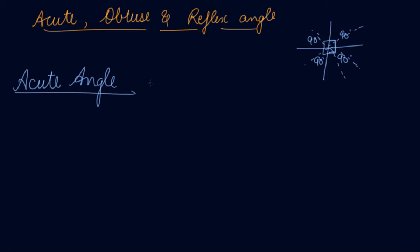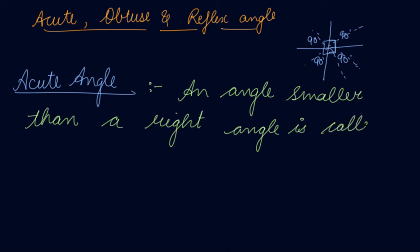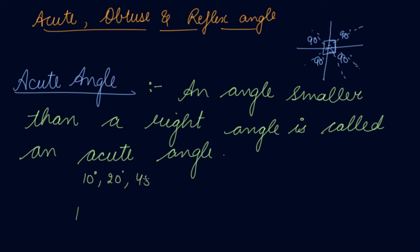An acute angle means an angle smaller than a right angle. Angles like 10 degrees, 20 degrees, 45 degrees, 60 degrees, 75 degrees, 30 degrees — all angles less than 90 degrees are known as acute angles.